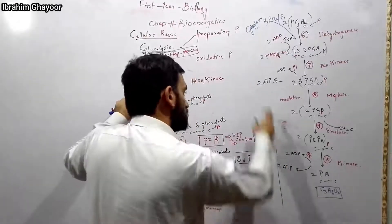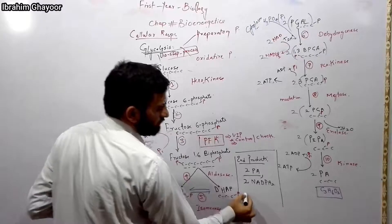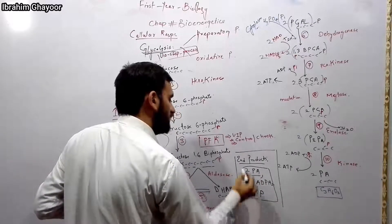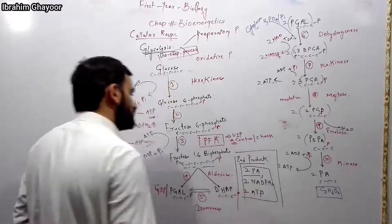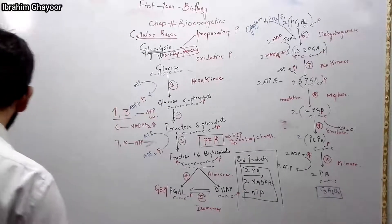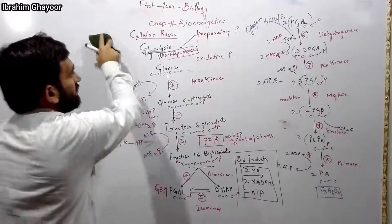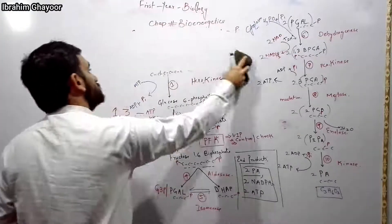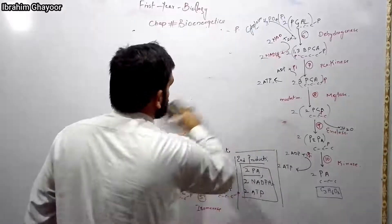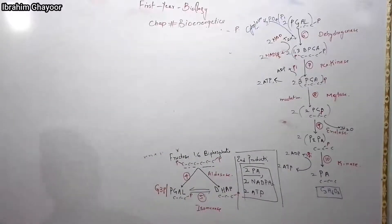The end products include pyruvate. After glycolysis comes the link reaction (transition reaction), which connects glycolysis to the Krebs cycle. The link reaction occurs in the mitochondrial matrix.